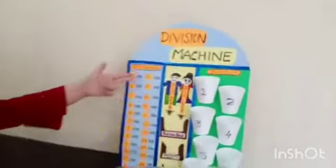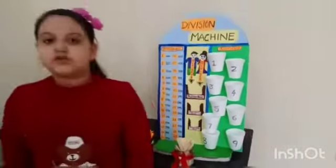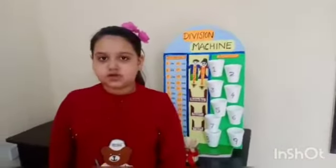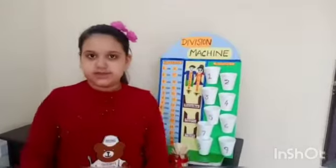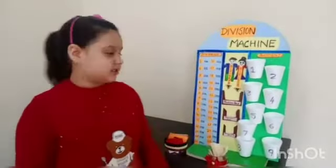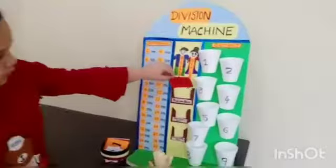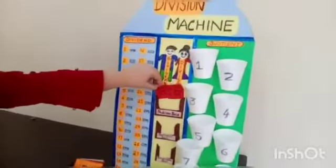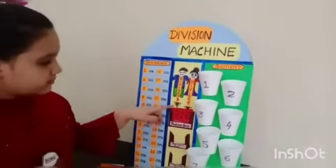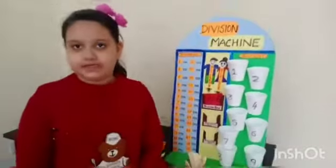This is my division machine. Using that machine, I will solve one equation. Let's see how it works. I am taking one check and I put in the problem box. My problem is 18 divided by 6.